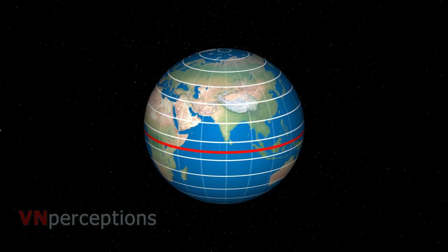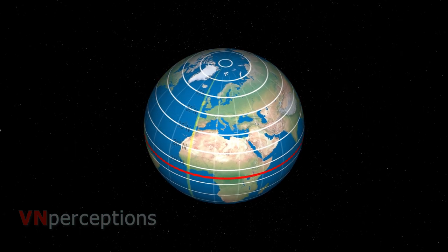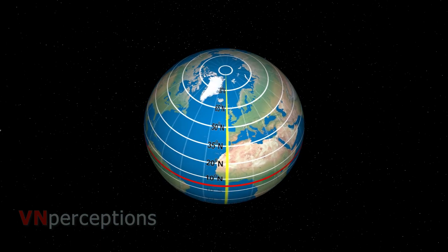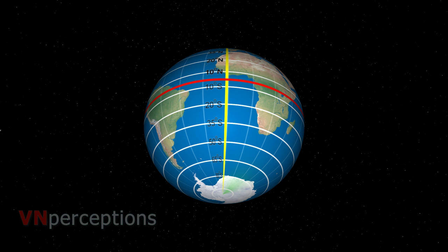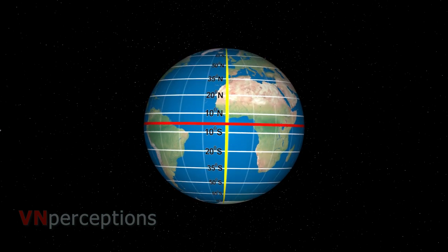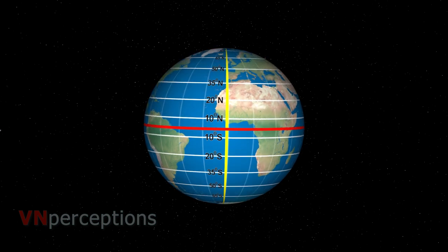There are 90 parallels of latitude in the northern hemisphere to the north of the equator. Similarly, there are 90 parallels of latitude in the southern hemisphere to the south of the equator. All the lines of latitude are not drawn on a globe for practical reasons. Because if I draw all the lines, the map would appear very crowded.